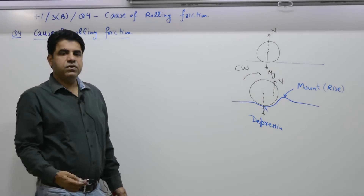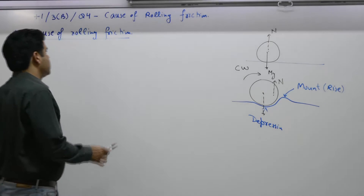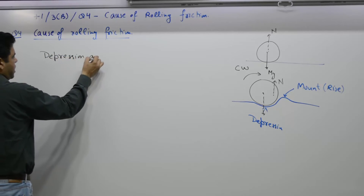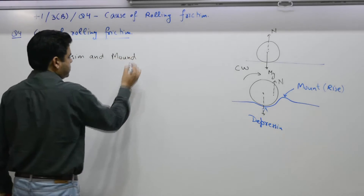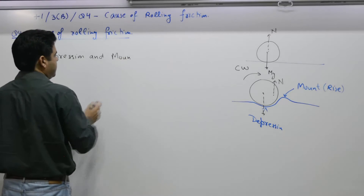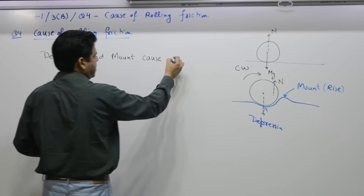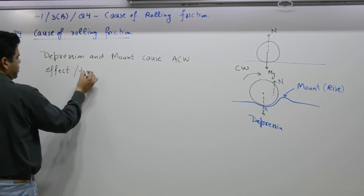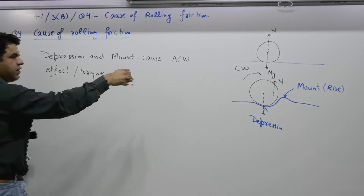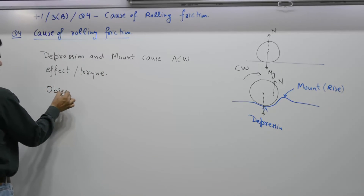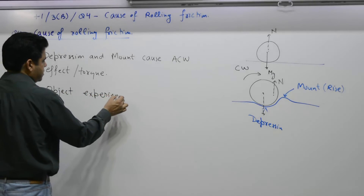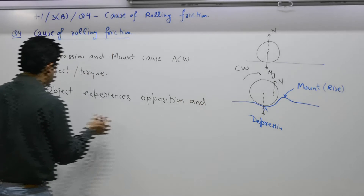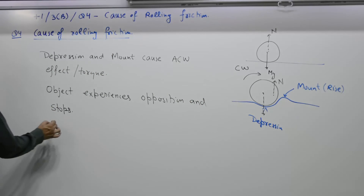The ball is moving to the right, which means it is rotating in the clockwise direction. This shift causes an anti-clockwise effect — that is why the ball stops after covering some distance. The depression and mount cause an anti-clockwise torque, and the ball experiences opposition and stops.